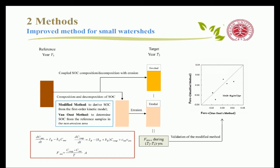The most classic method used to calculate the CO2 flux in small watersheds was presented by Van Oost and his colleagues and published in Science in 2007. This is the most classic method, and our improved method is based on this classic one.